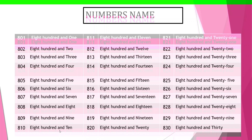Let's count the next numbers 811 to 820. Eight hundred: E-I-G-H-T, 8, H-U-N-D-R-E-D, 100, A-N-D, E-L-E-V-E-N, 11, means 811. Then let's begin — you can write the spelling of each number: 812, 813, 814, 815, 816, 817, 818, 819, 820.